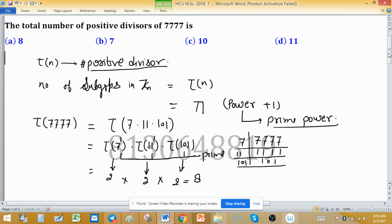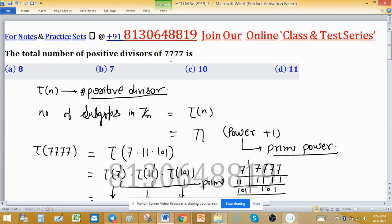Therefore, the total number of positive divisors of 7777 is 8, which is option A.